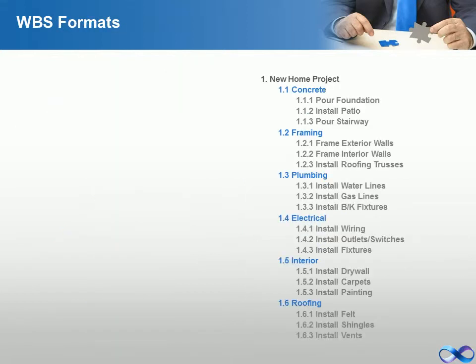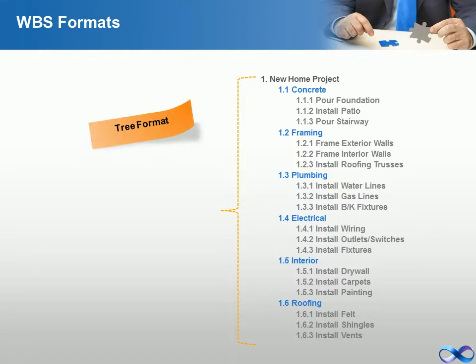The graphical structure of the work breakdown structure is an easy way to identify the project components and relationships of those components. However, the work breakdown structure can be displayed in another format as well — the tree format. Both formats are acceptable. The graphical format is at times easier to understand but can take up considerable space in a report. The tree format is not as easy to understand but is more easily incorporated into a report format. Note that the work breakdown structure codes and the structure of the levels in the tree format mirror the graphical format — the content has not changed, only the way the content is presented.